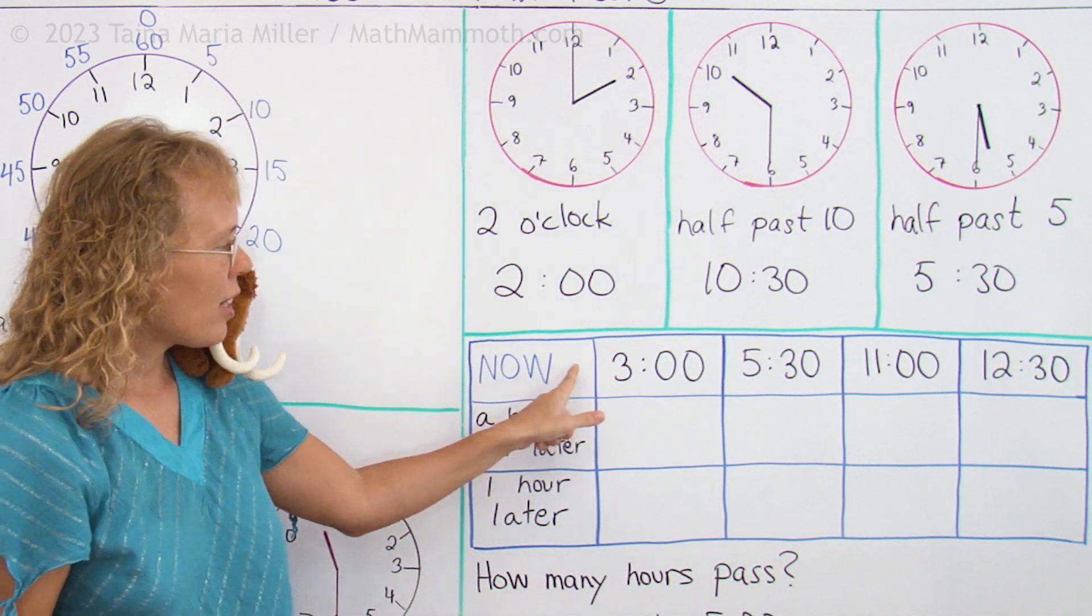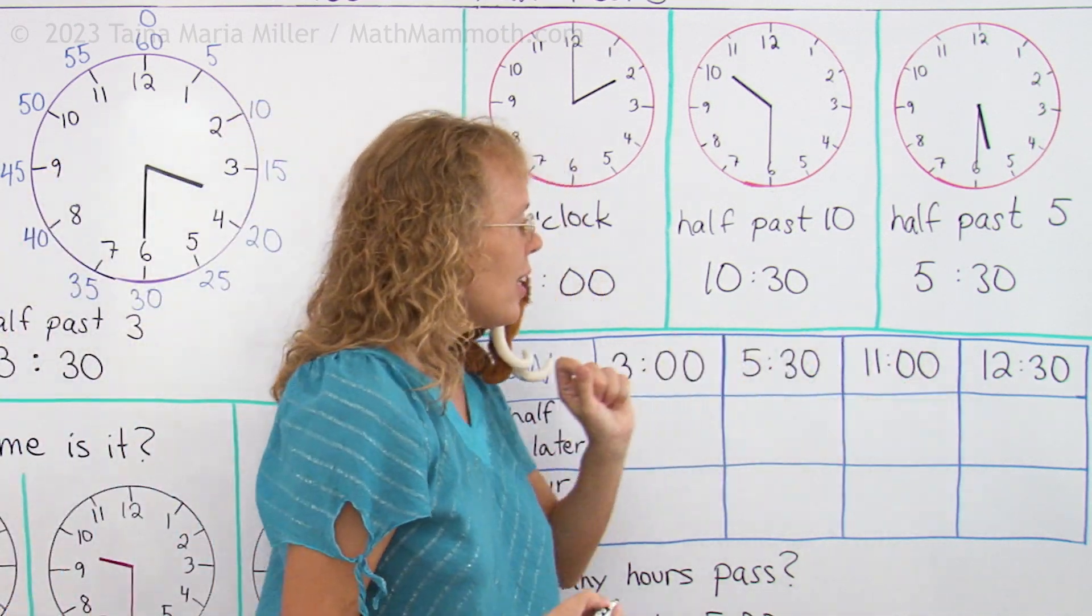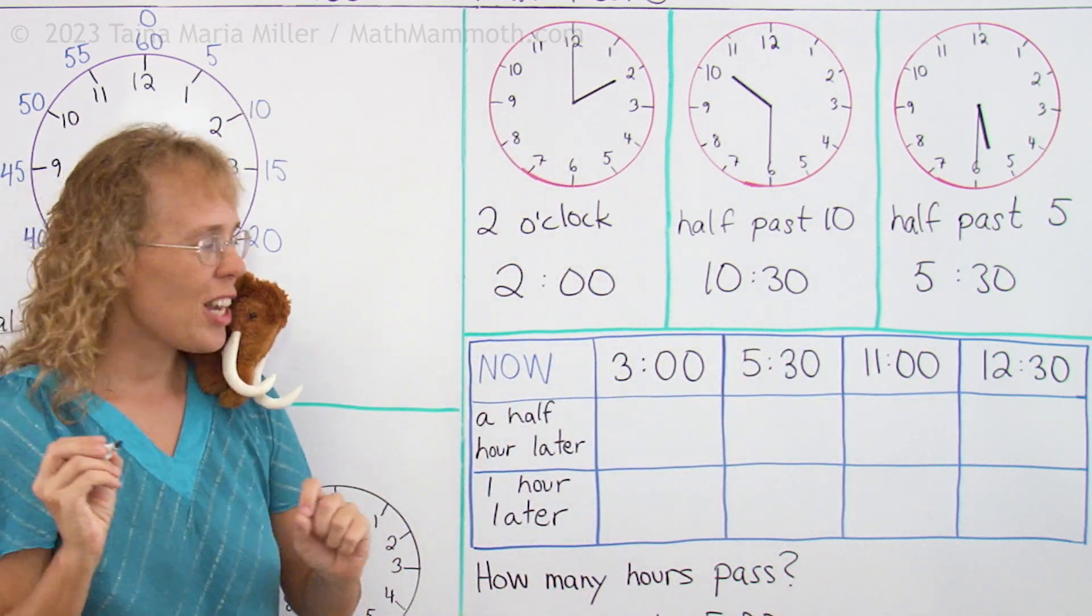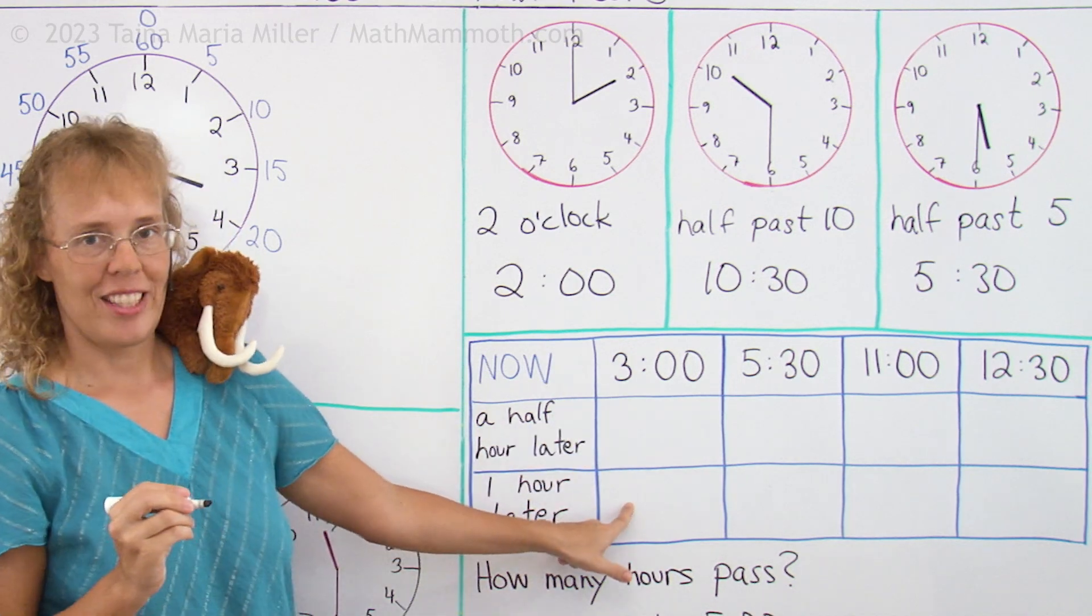Now we're here, we have the time now listed here. And then we have to figure out the time a half hour later, and then one hour later.